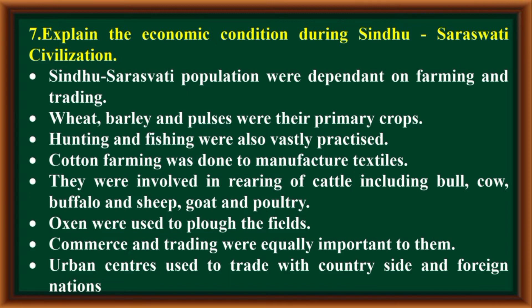Explain the economic condition during Sindhu Saraswati Civilization. The Sindhu Saraswati population was dependent on farming and trading. Wheat, barley and pulses were their primary crops. Hunting and fishing were also vastly practiced. Cotton farming was done to manufacture textiles. They were involved in rearing of cattle including bull, cow, buffalo, sheep, goat and poultry. Oxen were used to plow the fields. Commerce and trading were equally important to them. Urban centers used to trade with the countryside and foreign nations.